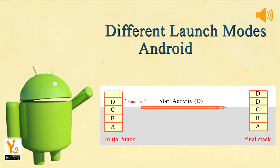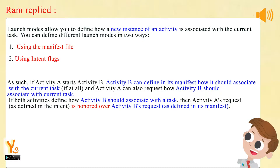Understanding different launch modes in Android. Launch modes allow you to define how a new instance of an activity is associated with the current task. You can define different launch modes in two ways: 1. Using the manifest file, 2. Using intent flags.